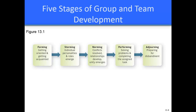The second stage is storming, characterized by the emergence of individual personalities and roles and conflicts within the group or team. The length of this stage depends on the clarity of goals and the commitment and maturity of all team members. Individuals may test the leader's policies to determine how they fit into the power structure. In this stage, the leader should encourage members to suggest ideas, voice disagreements, and work through their conflicts.